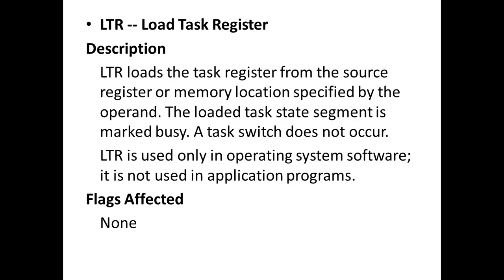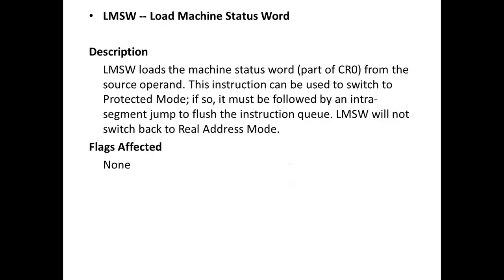LMSW (load machine status word) loads the machine status word from the source operand. This instruction can be used to switch to protected mode, and must be followed by an intra-segment jump to flush the instruction queue. Once switched to protected mode, LMSW will not switch back to real address mode. None of the flags are affected by the LMSW instruction.